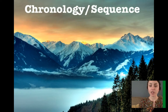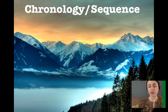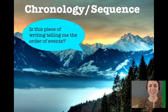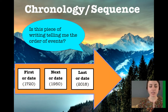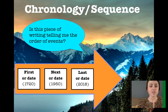The first is chronology or sequence, also known as time order. After reading an article, you have to ask yourself: is this piece of writing telling me the order of events? If so, you will most likely see transitional words like first, next, last, then, after that, etc., or you will see specific dates signaling when certain events occurred.